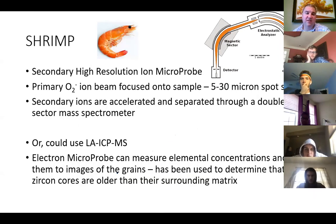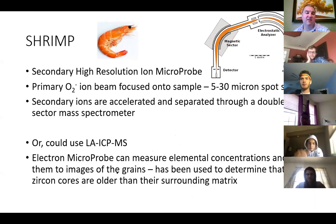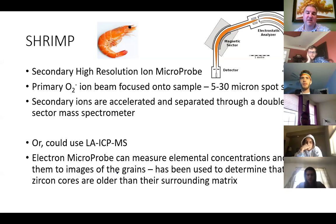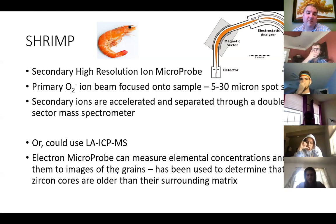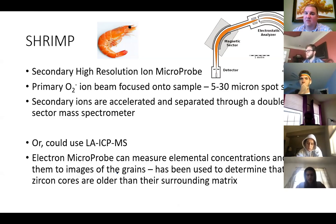One of the instruments used for this is called a SHRIMP — Secondary High-Resolution Ion Microprobe. You focus an oxide ion beam onto the sample with a 5 to 30 micron spot size, so you can see where you're shooting on the zircon grain and sample from different parts of it. This causes secondary ions to be ejected, which are then accelerated and separated through an electrostatic analyzer and magnetic sector in a double-sector mass spectrometer. You could also use laser ablation, but ion microprobes are generally more accurate.